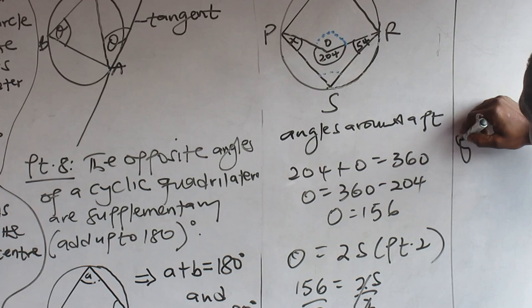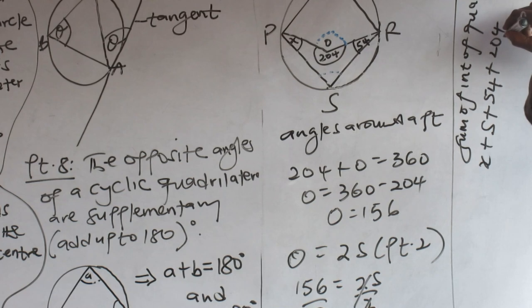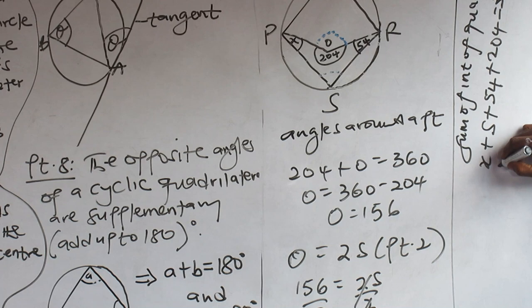So, isosceles. So, we have X plus 78 plus 54 plus 204 equals what? 360. You agree? Okay.